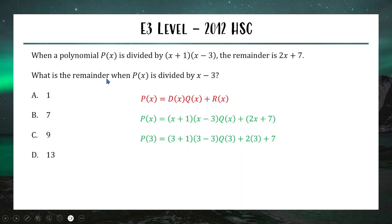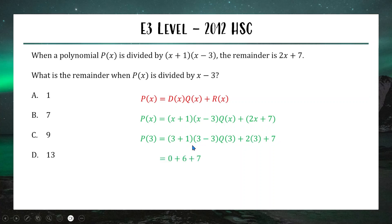To find the remainder when dividing by x minus 3, the remainder theorem tells us that P(3) equals the remainder. Taking our polynomial and replacing x with 3: we get (3+1)(3−3) times Q(3), plus 2 times 3 plus 7. Since 3 minus 3 is 0, the entire front term vanishes, leaving 6 plus 7 equals 13. So the remainder is 13, which is option D. That form in red is very useful for many questions.